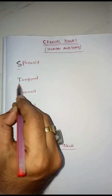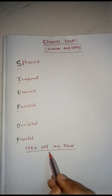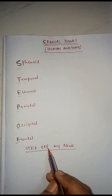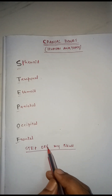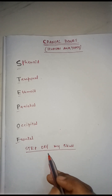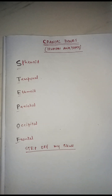So this is the statement 'Step of My Skull,' with the remaining F designating the completion of the sentence as a whole word. This is one of the easiest techniques to remember the names of the cranial bones in order.